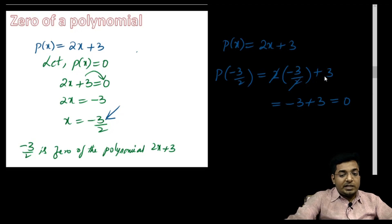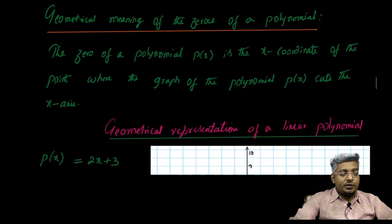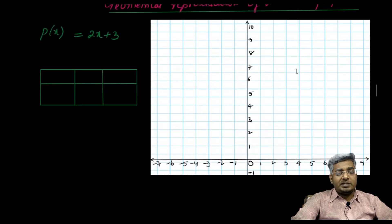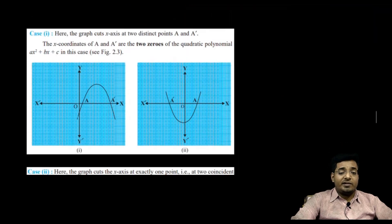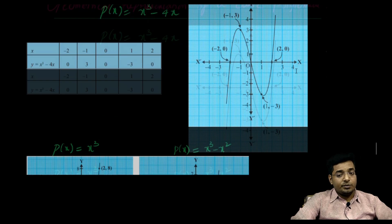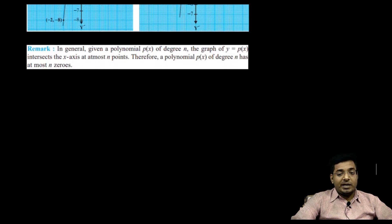We will stop this video here. In the next video, we will learn the geometrical meaning of the zeros of a polynomial — the geometrical representation of a linear polynomial, a quadratic polynomial, and a cubic polynomial. It was nice teaching you. I will see you all in the next video. Until then, goodbye.